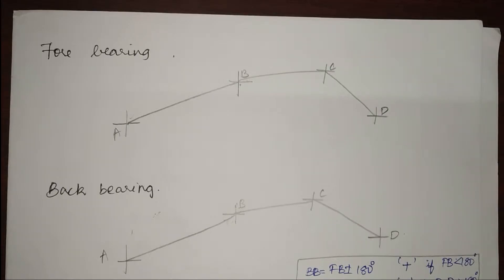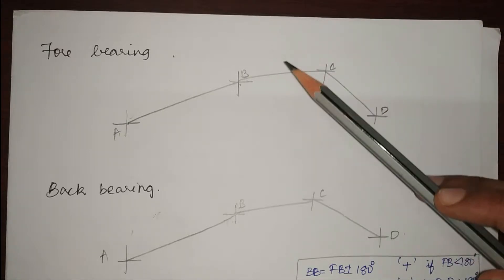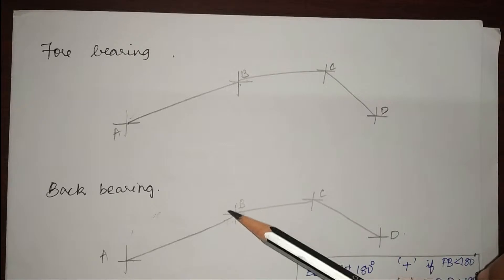Hello everyone, today we are going to see about forebearing and magnetic declination. We have already seen about whole circle bearing and quadrantal bearing in the previous videos. So jumping into what is meant by forebearing and back bearing.